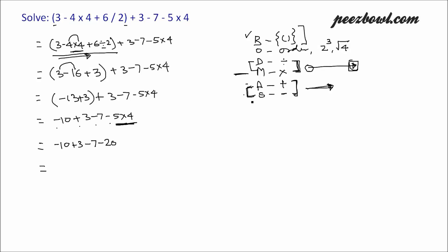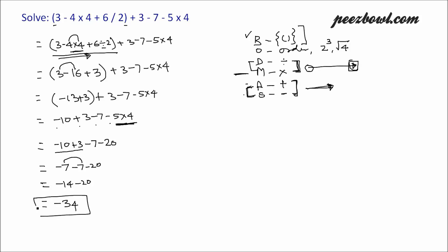Working from left to right: minus 10 plus 3 is minus 7, minus 7 minus 7 is minus 14, minus 14 minus 20 is minus 34. So the answer of this arithmetic expression is minus 34.